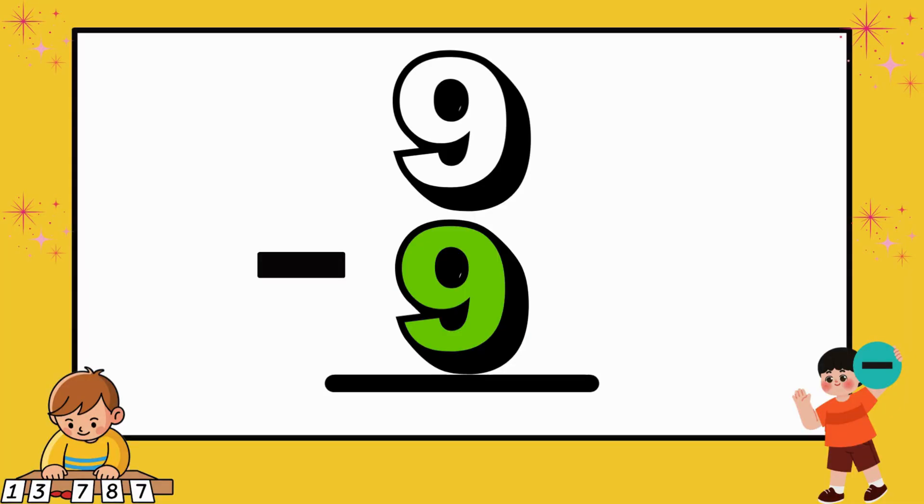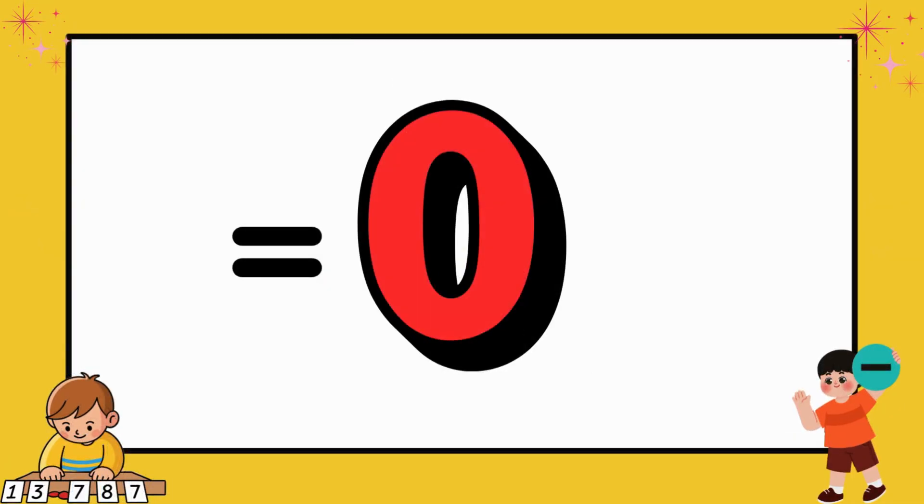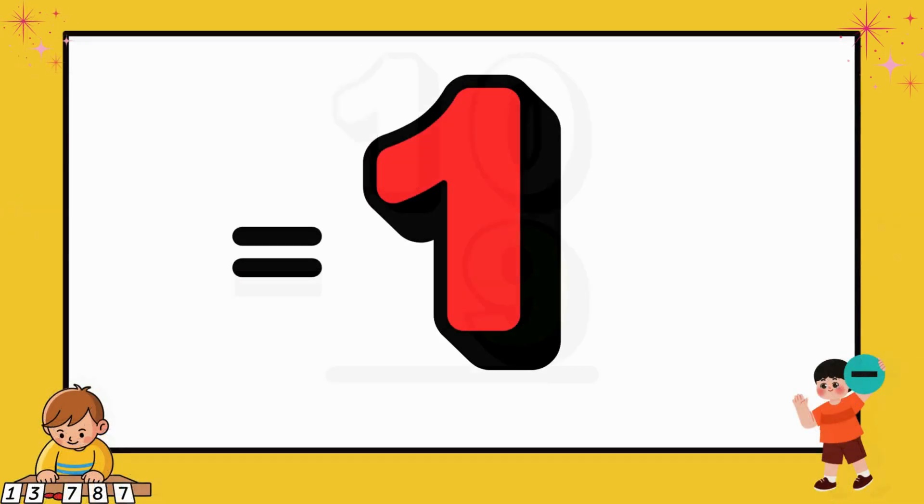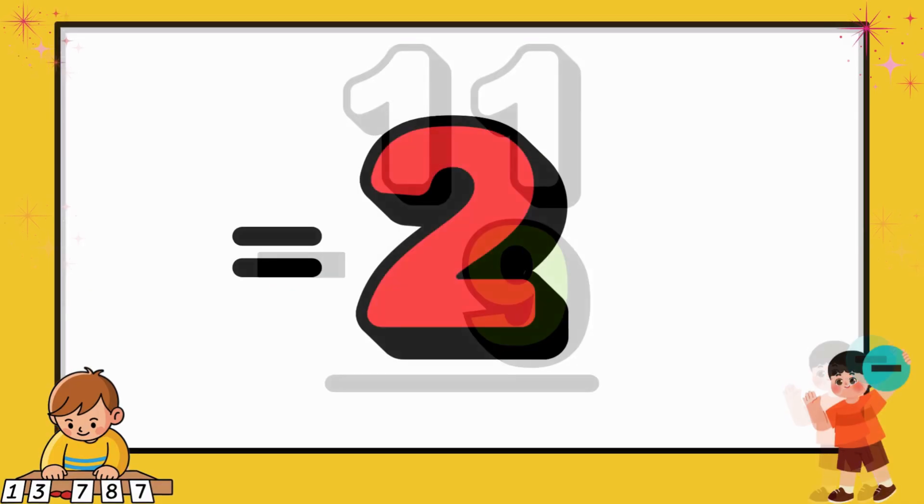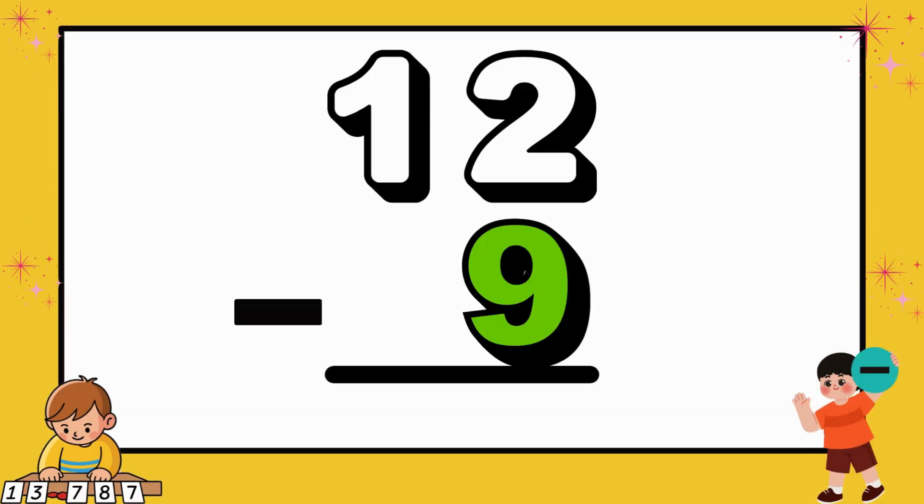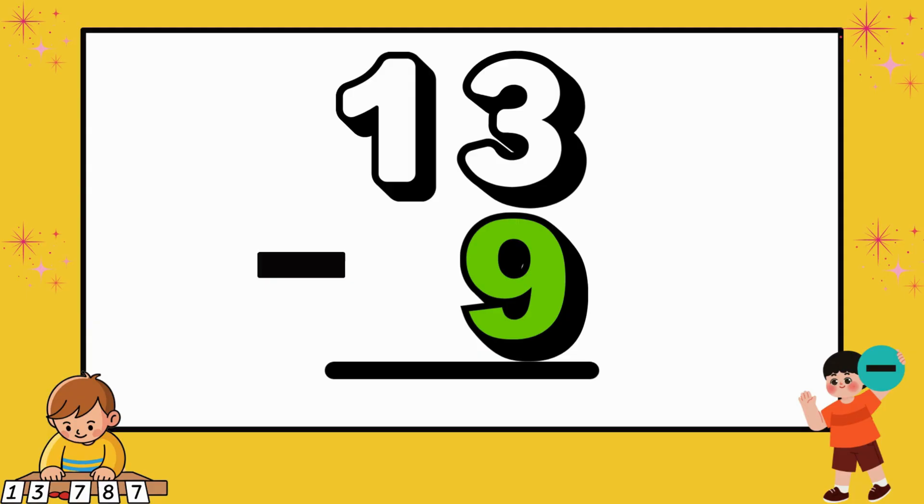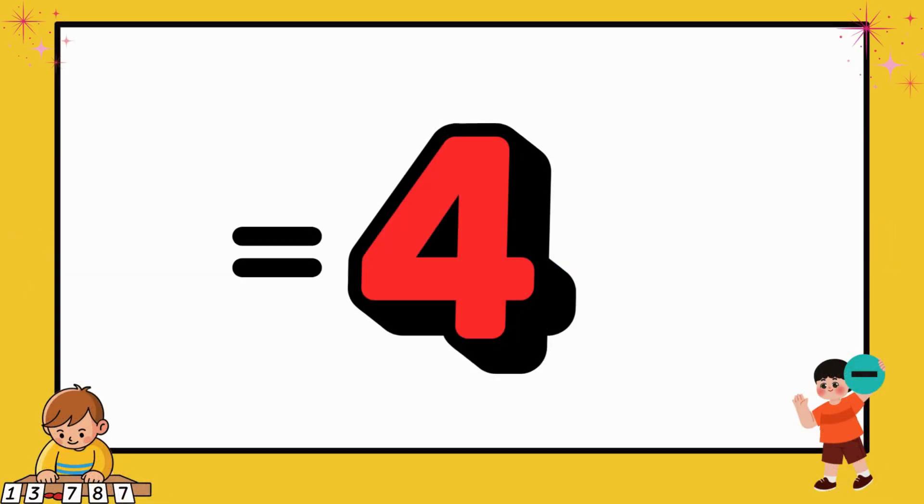First, 9 minus 9 equals 0. Next, 10 minus 9 equals 1. Then, 11 minus 9 equals 2. After that, 12 minus 9 equals 3. Now, 13 minus 9 equals 4.